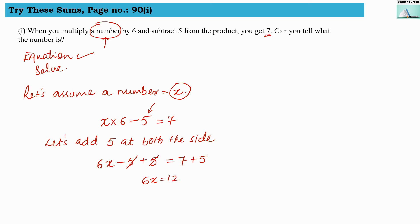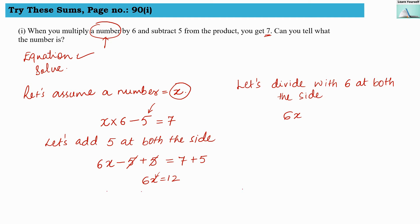Now 6 is in multiplication with x. If I want to separate this variable x, I have to divide by 6. So in the next step we are going to divide by 6 on both sides. So 6x divided by 6 — the 6 and 6 will get cancelled out — and here we will get x equals to 2. So 6 twos are 12. So x equals to 2 is the solution, and the number we assumed is 2.